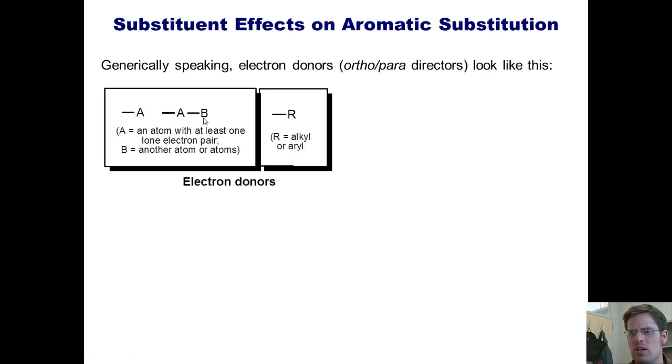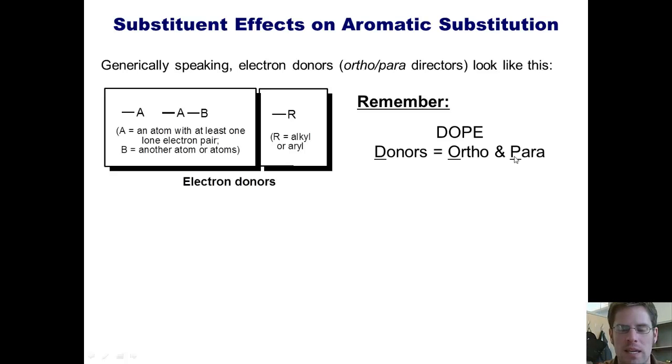Is there a good way of memorizing that donors are also ortho-para directors? Yes, there is. We have to remember that donors smoke dope. In other words, we can remember that donors are ortho-para directors. D-O-P. I added the E because I thought it would be more easy to memorize dope instead of dop.